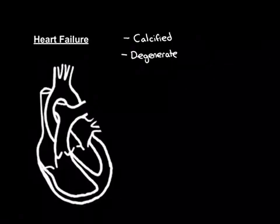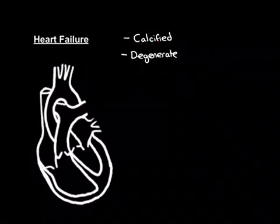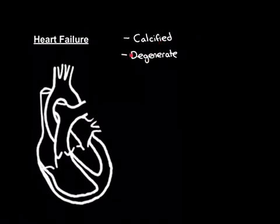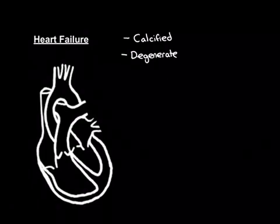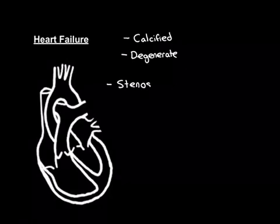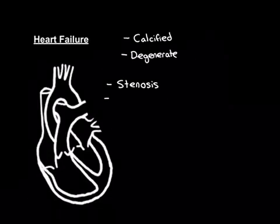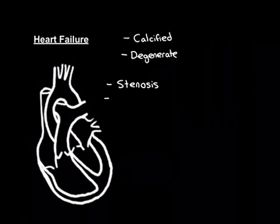Calcification can lead to both stenosis and regurgitation. Degeneration is mainly going to lead to regurgitation. For each valve you can suffer with stenosis: aortic stenosis, mitral stenosis, pulmonary stenosis, tricuspid stenosis. Pulmonary and tricuspid stenosis are not very common at all. Aortic stenosis is the main one, and mitral stenosis is another important one.